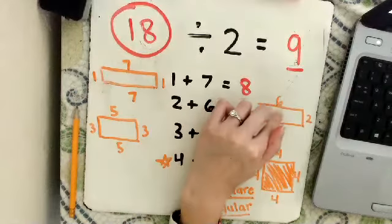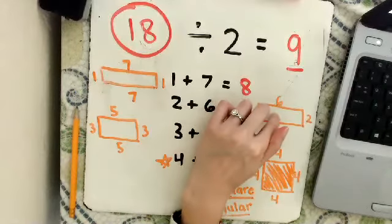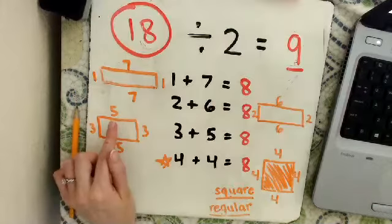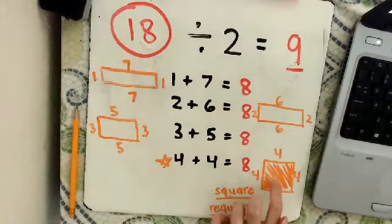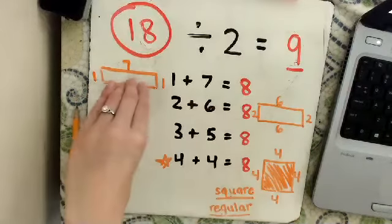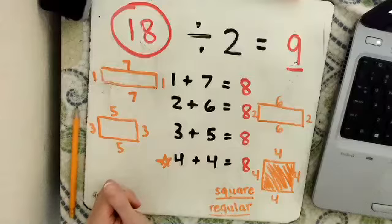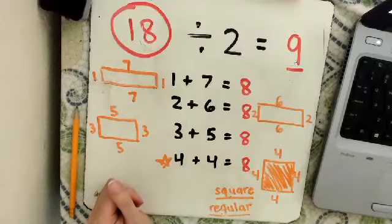Two times six, 12. Not the same area. Three times five, 15. Also not the same area. And four times four is 16. So the areas are not the same. But what is the same? The perimeter.